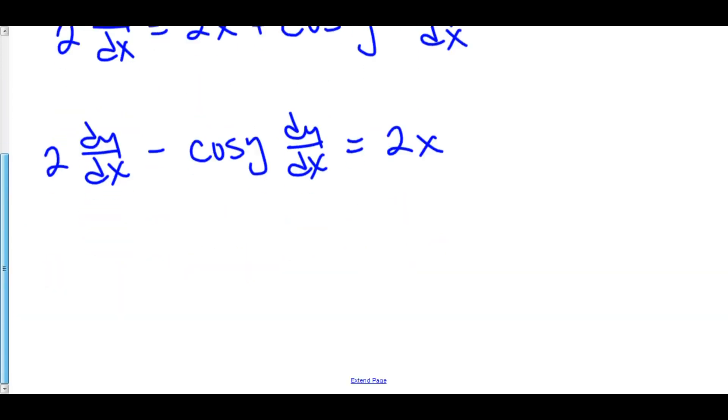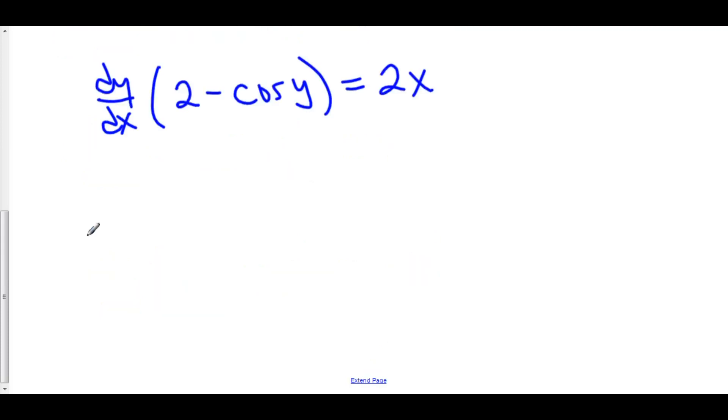We can factor out a dy/dx at this point. And we have dy over dx quantity 2 minus cosine y is equal to 2x. And finally dy over dx is equal to 2x over 2 minus cosine of y.